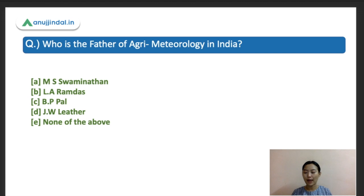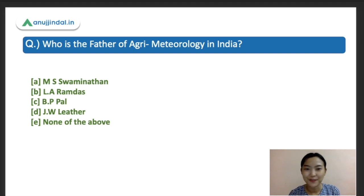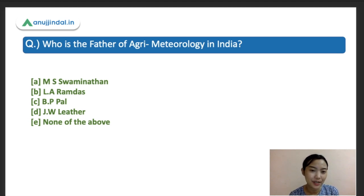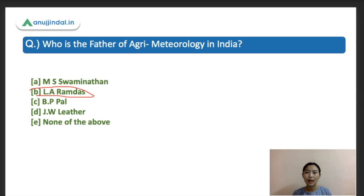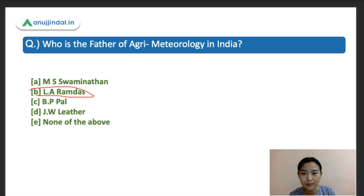Question four: Who is the father of agri-meteorology in India? Options: A) M.S. Swaminathan, B) L.A. Ramdas, C) B.P. Pal, D) J.W. Leather, E) none of the above. The correct answer is L.A. Ramdas. It's useful to also list out the fathers of other allied subjects in agriculture — soil science, agronomy, agricultural engineering — and make a table for easier study.